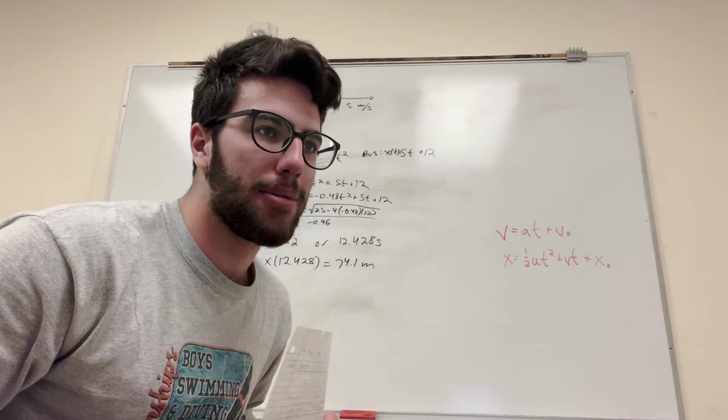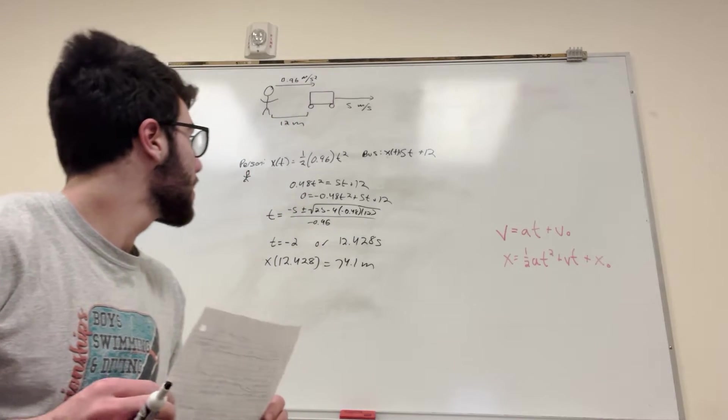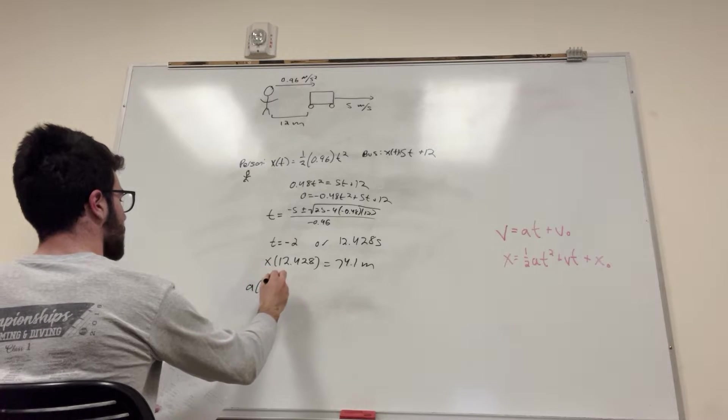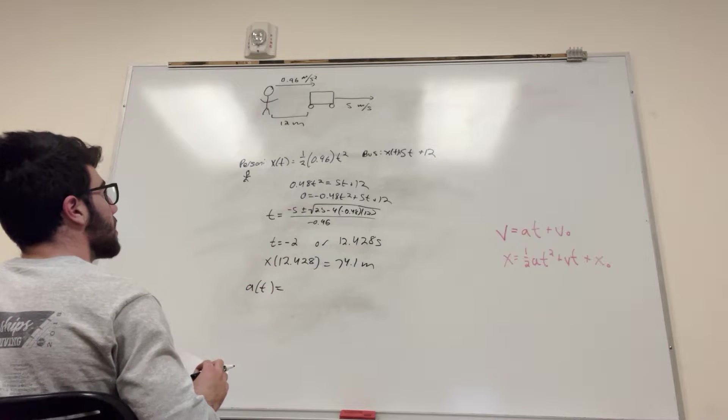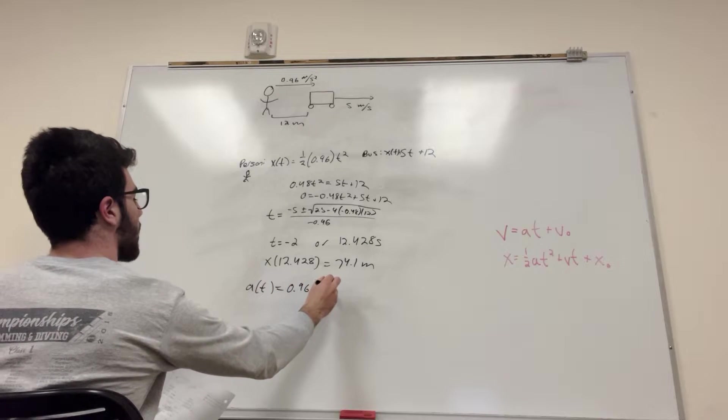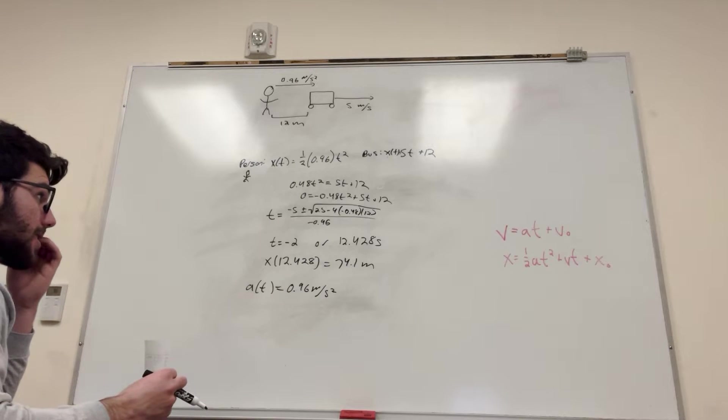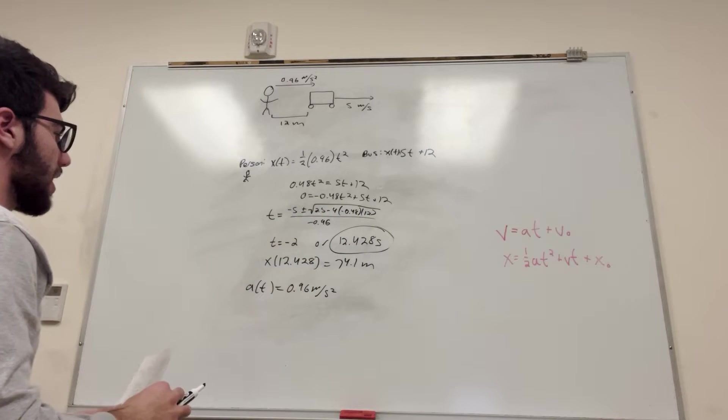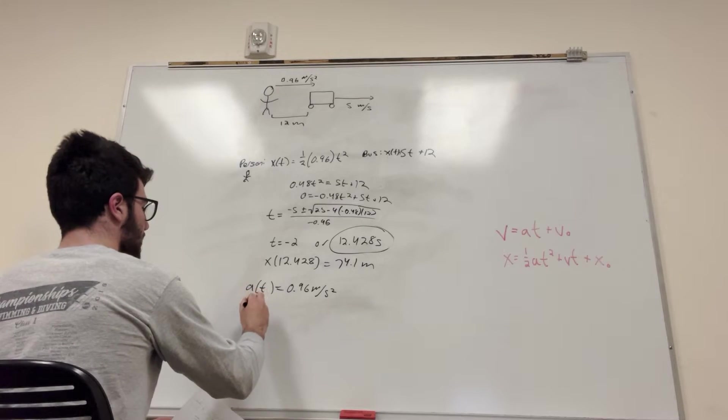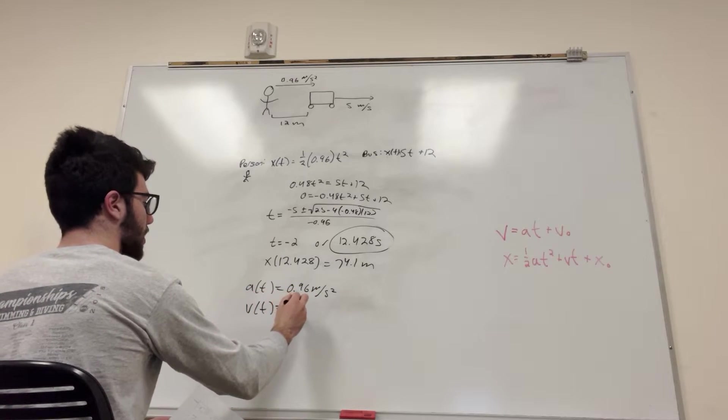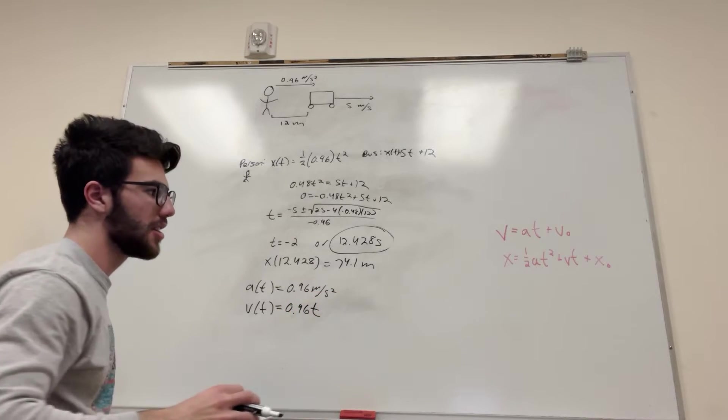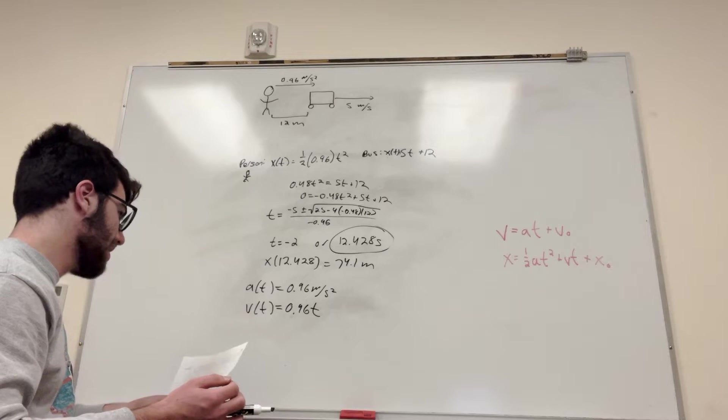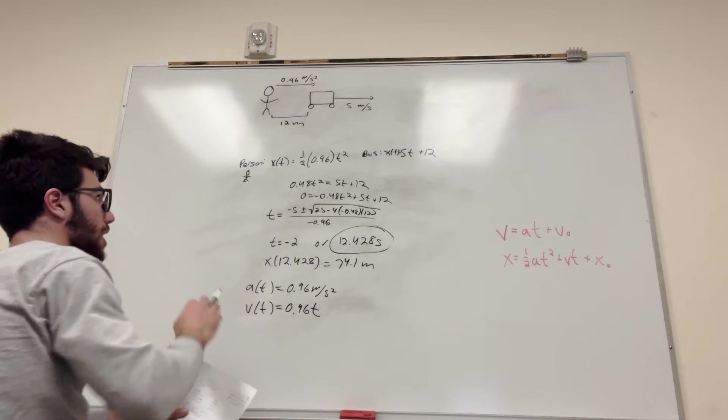How fast would you be running by then? Find the final speed as you reach the bus. Acceleration equals 0.96 meters per second squared. If we're going this fast for 12.428 seconds, how fast would our velocity be? Let's do our velocity equation. Velocity equals the acceleration 0.96 t plus our initial velocity, which is zero. So simply all we have to do is plug in this time into our velocity equation.